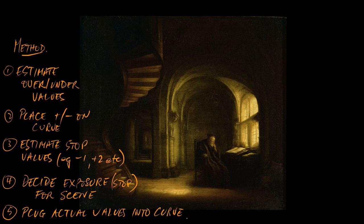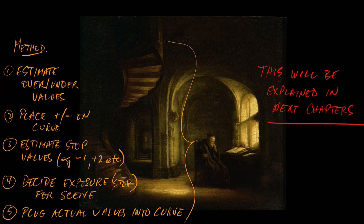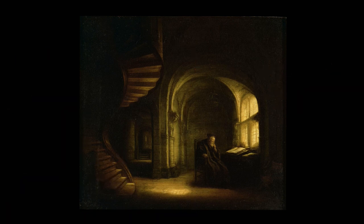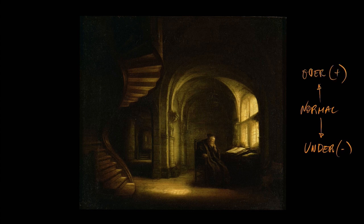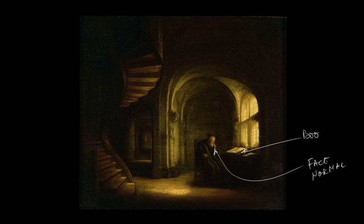What I want to do is have you start thinking in terms of normal, over, and under exposure. So instead of worrying exactly about where it is on the curve right now, let's just go through this painting and plug in values. Normal exposure will give us an N, over exposure a plus, and under exposure a minus. To start off, let's go for normal — we'll look at the Scholar's face and give him a normal value. Then the book, obviously just sitting in front of the window, we'll give that a normal value as well. And there's one other normal value which is the back wall. So we've got the back wall, the book, and the Scholar's face as our normal values.